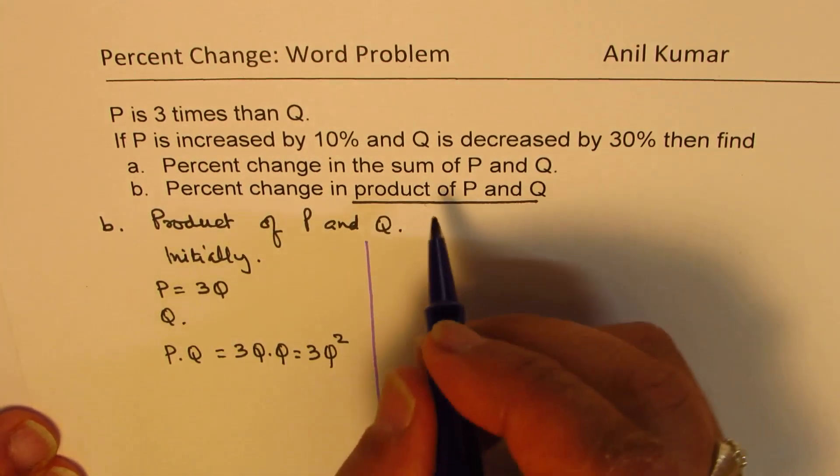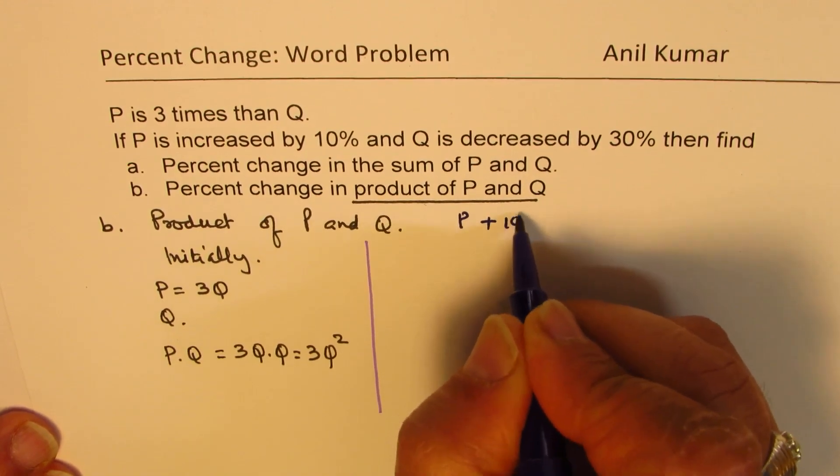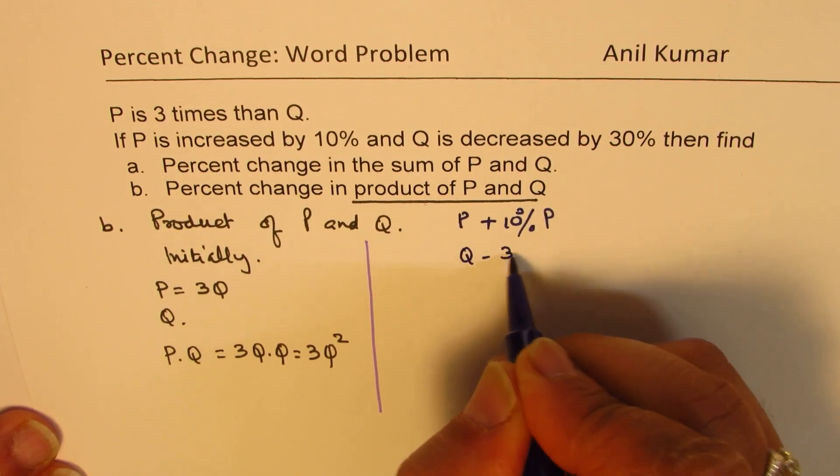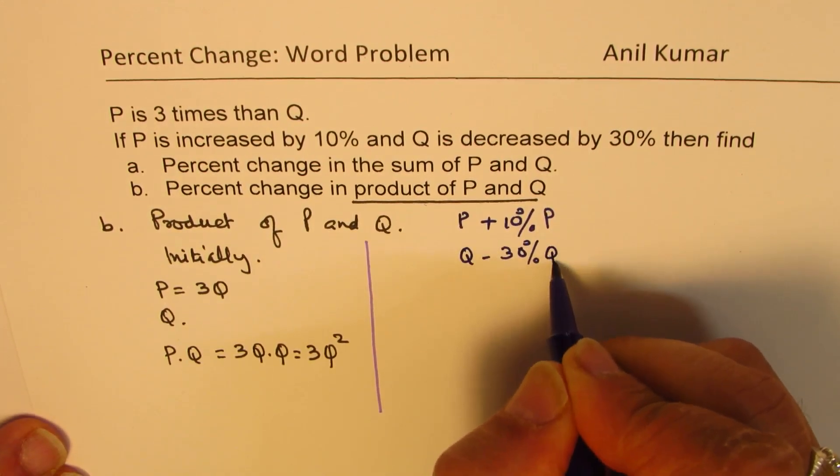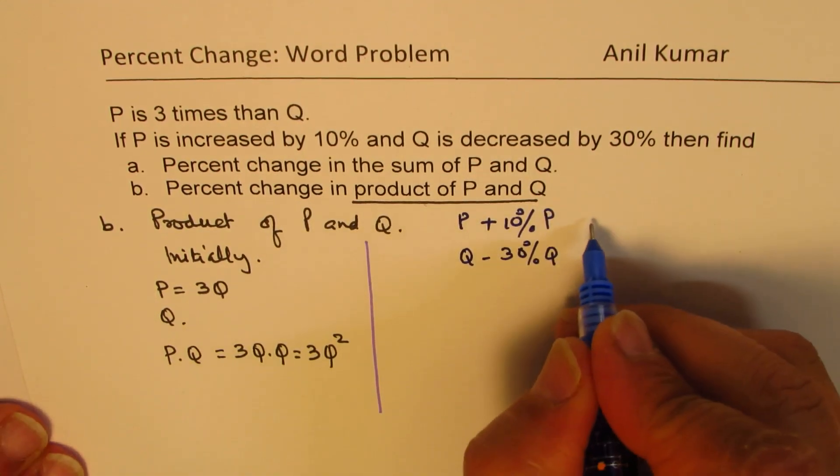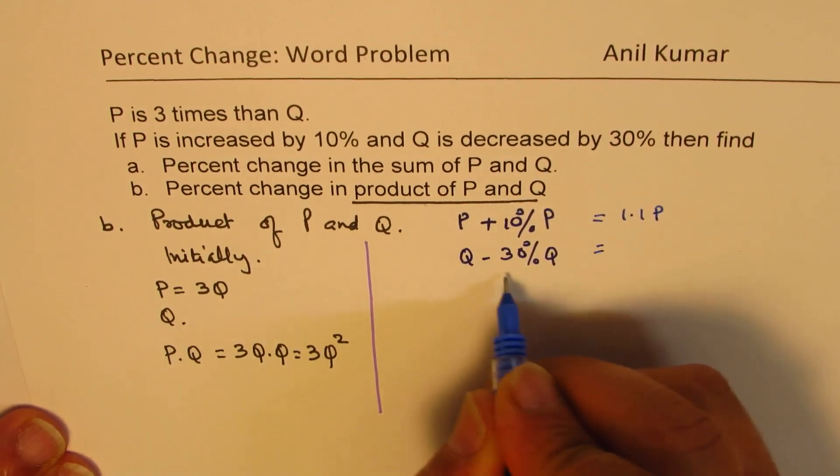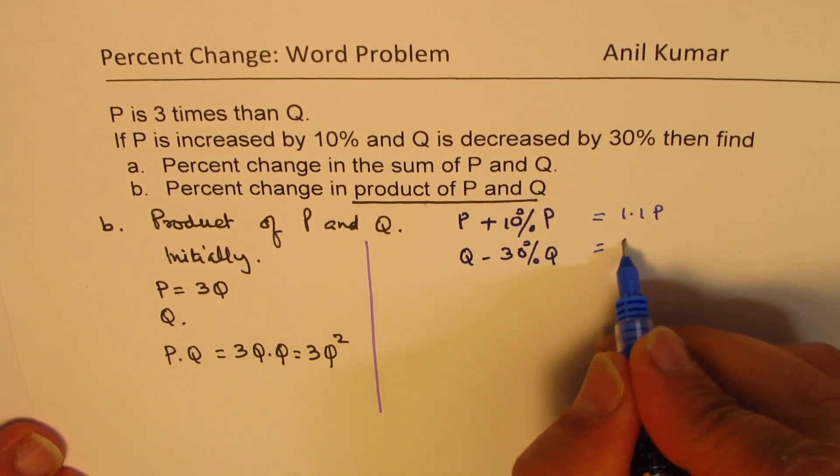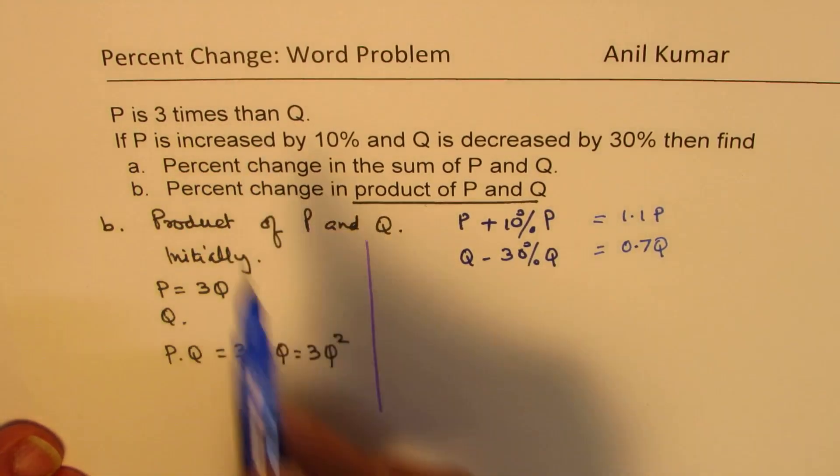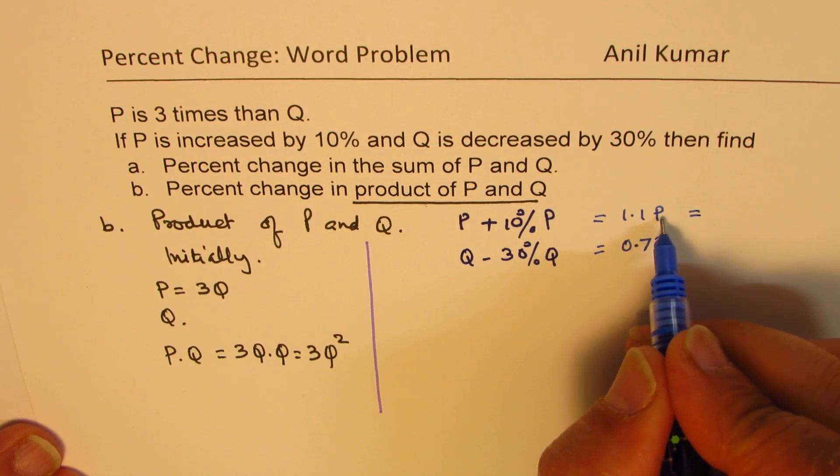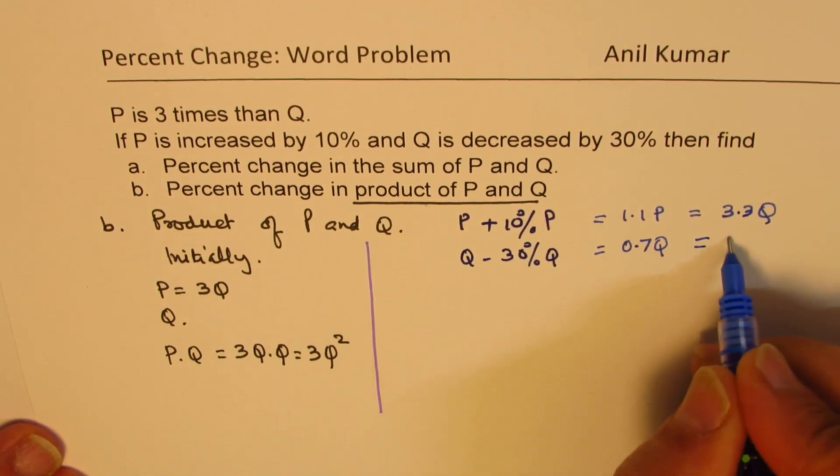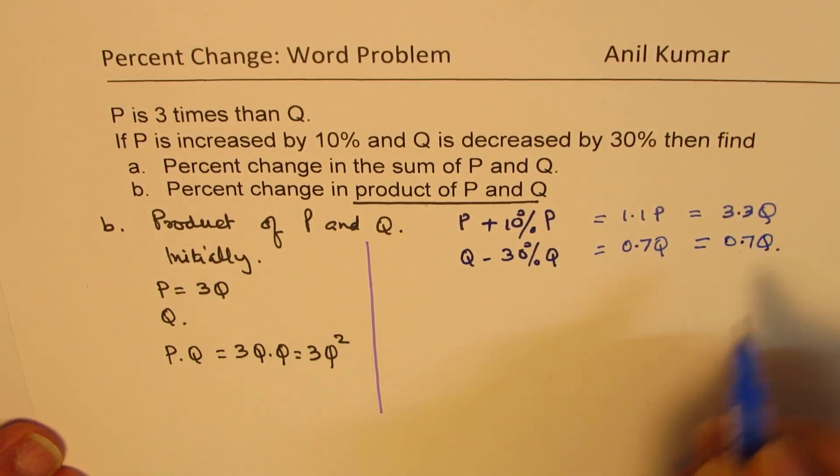Now, what changes happen? We have increased P by 10%. And as far as the Q is concerned, we have decreased by 30%. So when you do that change, the value of P becomes 1.1P, the value of Q remains 70% of what it is. Since we know that P is equal to 3 times Q, I will write P as 3 times Q. So I get 3.3Q, just as we did earlier. And this value is 0.7Q.